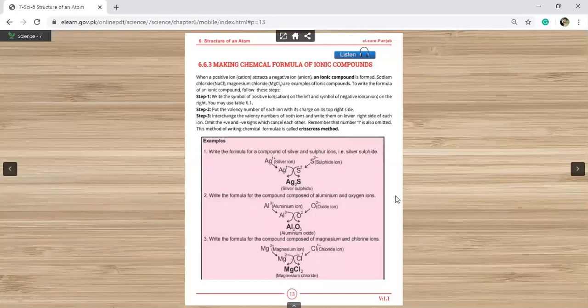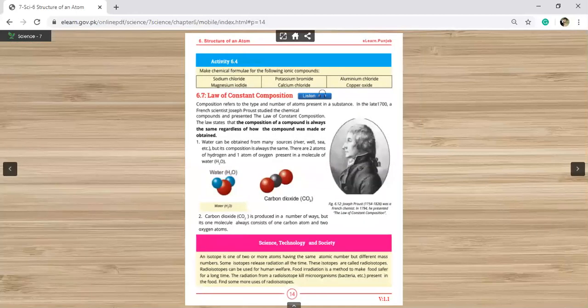Write the formula for the compound composed of aluminum and oxygen. Al 3 positive and O2 negative, then O2 will become Al 2 and Al 3 will become O3, so Al2O3. Now we have a chemical formula for the following ionic compound. Next we have law of constant composition.